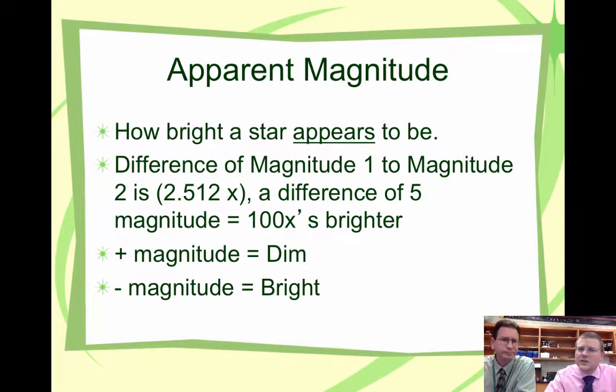The number he gave to the bright stars was one. What about the dimmer stars? The dimmer stars were given larger numbers, because they weren't as close to number one as the brightest star.